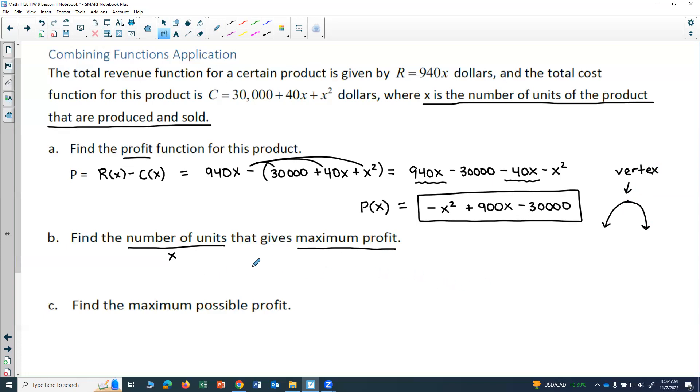That would give us the maximum. And so for the vertex, we know that x = -b/(2a). And so I just have to plug in the numbers. My b is 900. So I would get -900 over 2 times a. a is going to be a -1 because that's all that's in front of the x squared. Negative over negative gives me positive. So I'm going to have 450 units. So that would give me a maximum profit.